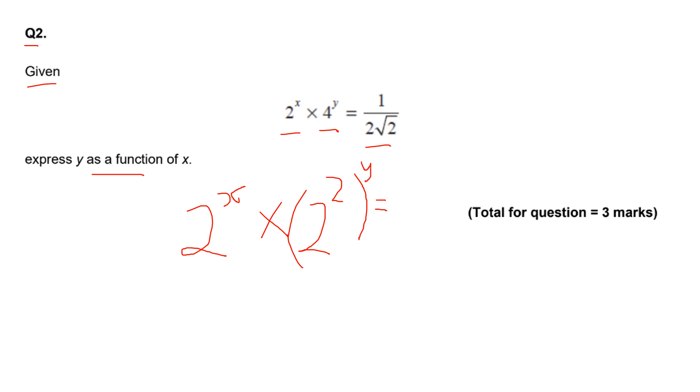And then on the right hand side, one over two root two can be written as two to the power of minus three halves. That's because two is two to the power of one, root two is two to the power of a half, so you have two to the power of one times two to the power of a half.